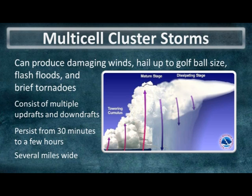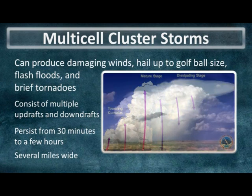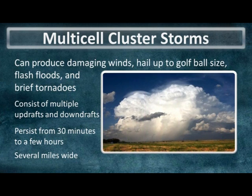Pulse storms are very small in aerial coverage, perhaps only one to three miles wide at most. Thunderstorms that have more than one updraft and downdraft we call multi-cell cluster storms. These storms are more organized than pulse storms and can last from 30 minutes to a couple hours, covering an area several miles wide. Since they're more organized, they can produce damaging winds, large hail up to about golf ball size, flash flooding, and even some brief tornadoes.